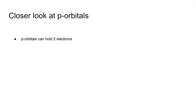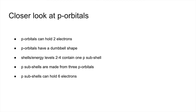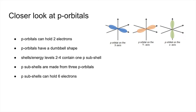P orbitals can hold two electrons and they have a dumbbell shape. Shells 2 to 4 contain one P subshell — so there's no P subshell in the first shell. P subshells are made from three P orbitals, so P subshells can hold six electrons, since each orbital can hold two. The three separate P orbitals are drawn along each axis: the PX orbital, the PY orbital, and the PZ orbital. Put them all together in one diagram and you get the P subshell, which holds the six electrons.